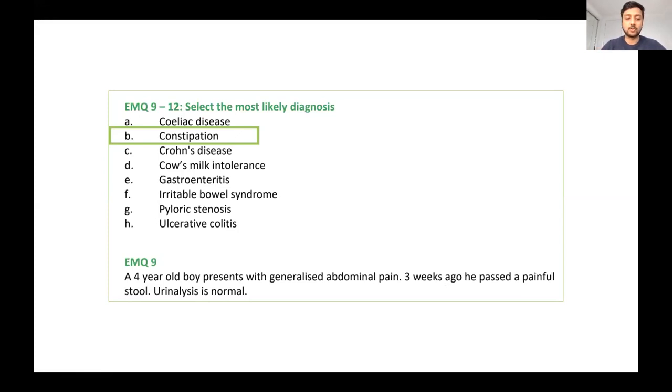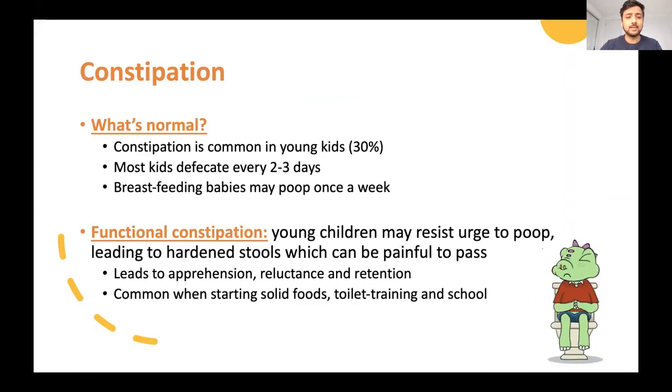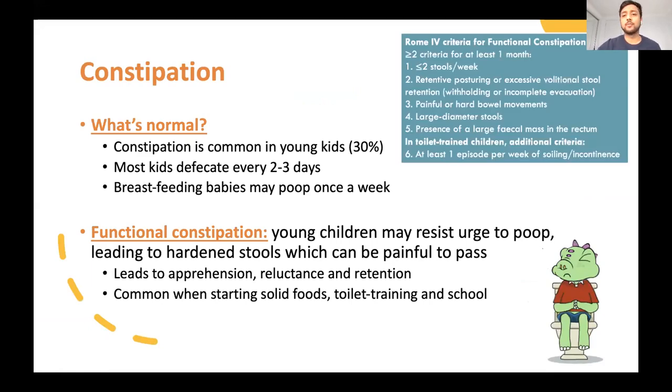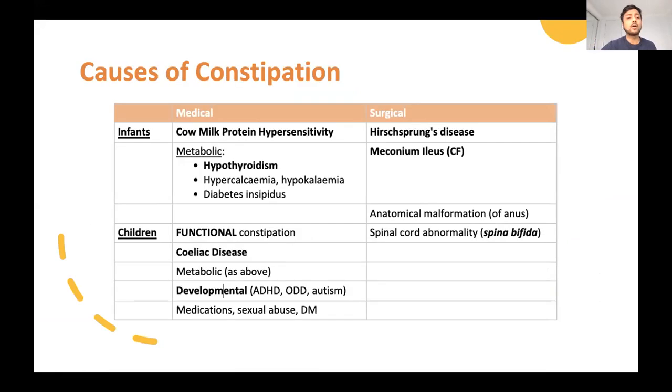Functional constipation is when young children resist the urge to poop, that leads to stools hardening, which become painful to pass. Then they associate pain with pooping, so they don't poop, you get reluctance, then retention, and constipation. The child above had a painful movement three weeks ago, now he stopped pooping, that's why he has generalized abdominal pain. Urinalysis was done to rule out UTI. You also have Rome criteria of diagnosing functional constipation. However, there are other causes: for infants, cow milk protein intolerance, metabolic causes, surgical causes. In children, functional constipation, metabolic stuff, developmental issues, and celiac disease.